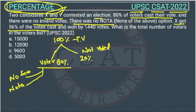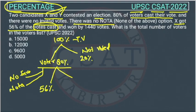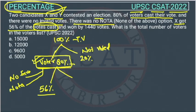X got 56% of the votes cast. So out of the 80% who voted, X is getting 56%. The other person Y will get the remaining 44%, that is 100 minus 56.